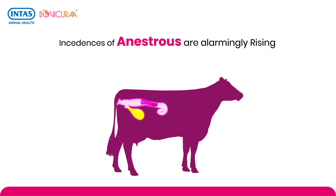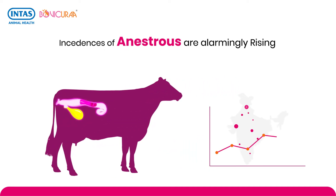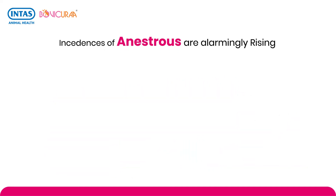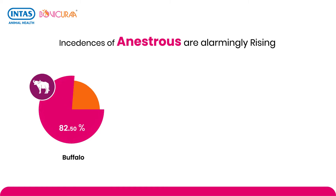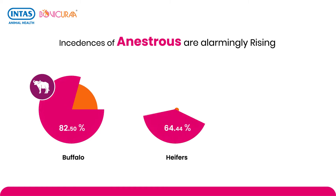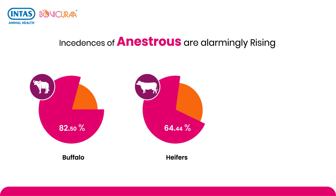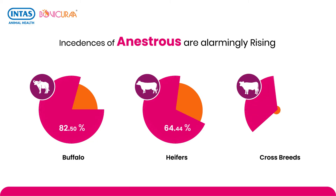Incidences of Anestrus are alarmingly rising — in buffalos up to 82.50%, in heifers up to 64.44%, and in cross breeds up to 40.40%.